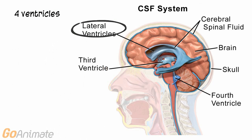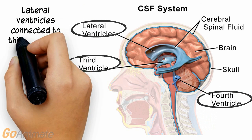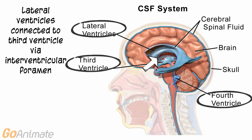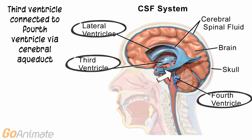There are four hollow areas, or ventricles, inside of the brain. These include two lateral ventricles, a third, and fourth ventricle. The lateral ventricles connect to the third ventricle via the interventricular foramen. The third ventricle connects to the fourth via the cerebral aqueduct.